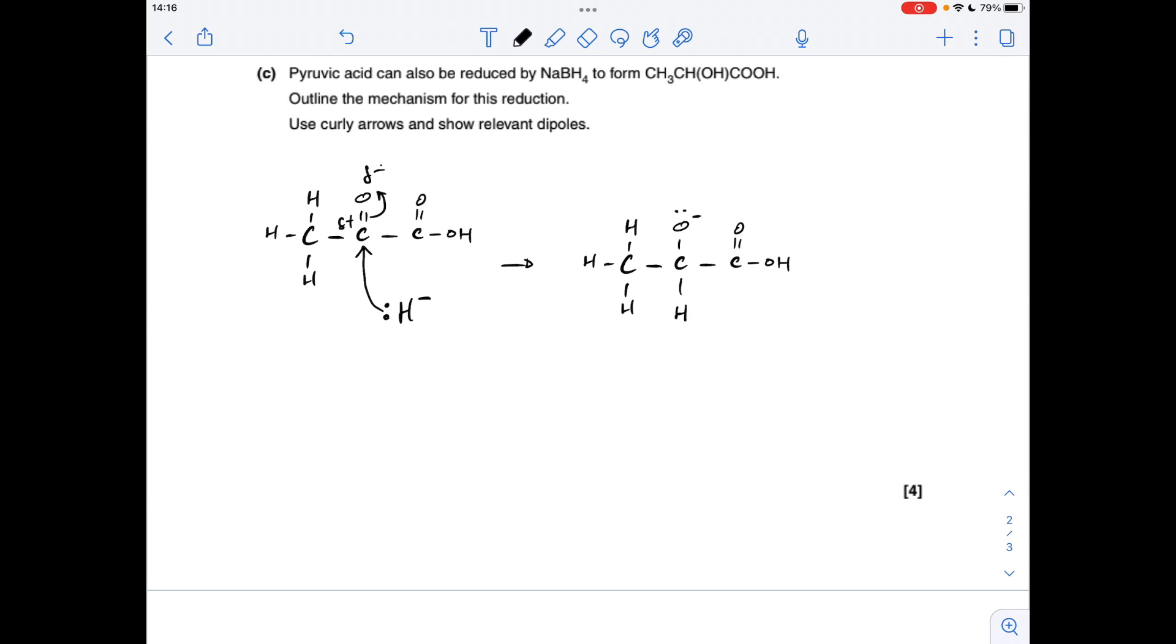Now there's a couple of ways to finish off the mechanism. You can either bring a water molecule into play. So obviously put the dipoles on it. Then we take a pair of electrons or the curly arrow, sorry, from the lone pair on the O- to the slightly positive hydrogen. And that's going to break that HO bond. So that's obviously going to produce the product and a hydroxide ion.